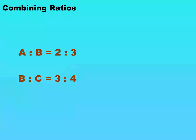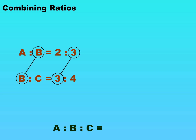If A is to B is equal to 2 is to 3, and B is to C is equal to 3 is to 4, can you guess what A is to B is to C? Since the number of units of B is the same in both ratios, we can simply say that A is to B is to C is equal to 2 is to 3 is to 4.